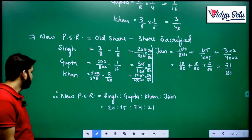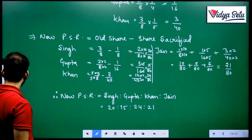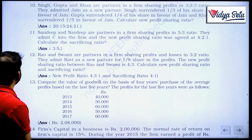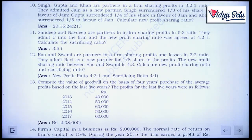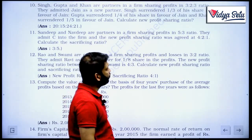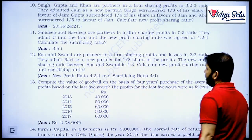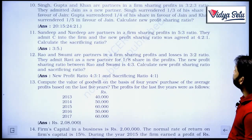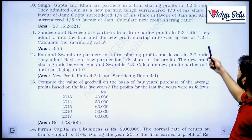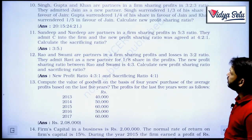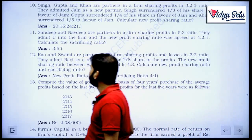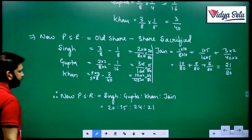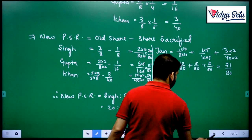Let us look at question number 11. Sandeep and Navdeep are partners in a firm sharing profits in the ratio of 5 is to 3. They admit C into the firm and the new profit sharing ratio was agreed at 4 is to 2 is to 1. Calculate the sacrificing ratio. Old ratio is given, new ratio is given, sacrificing ratio is straightforward.